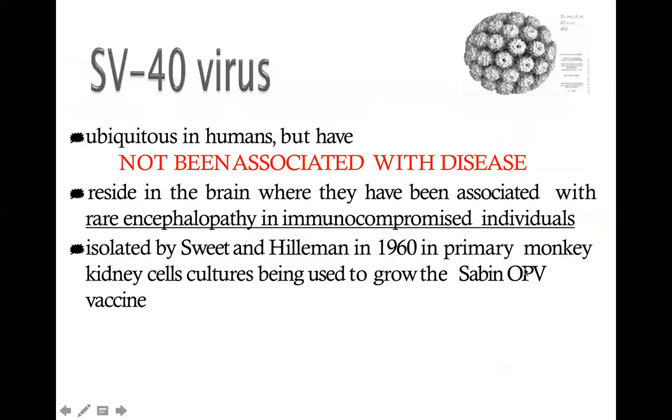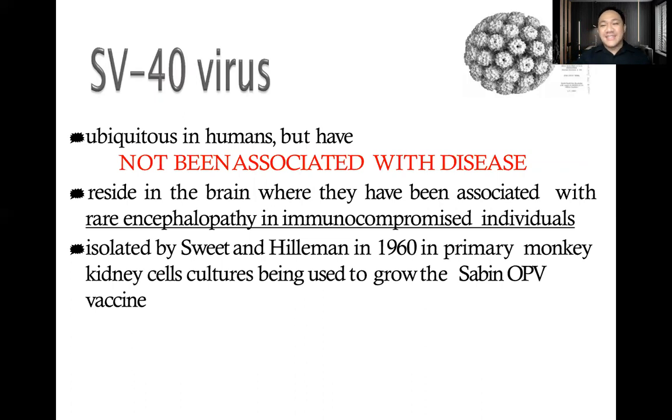The SV40 virus is ubiquitous in humans but is NOT associated with any type of disease. It just resides in the brain, where it has been associated with a rare encephalopathy in immunocompromised individuals. So we have the papova viruses: PA for papilloma, PO for polyoma, and VA for the vacuolating virus SV40. Now let's go to the last topic — adenoviruses.